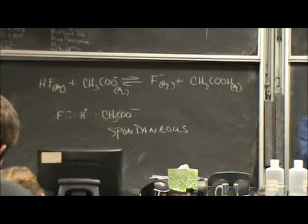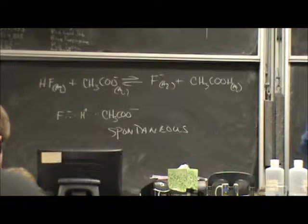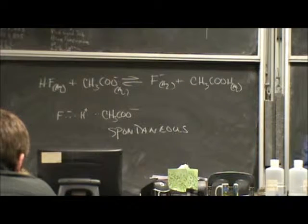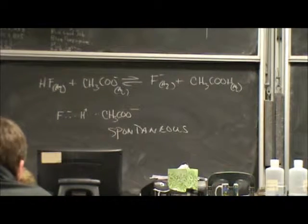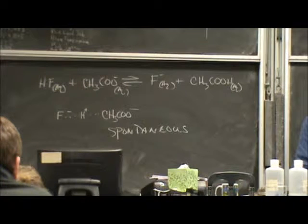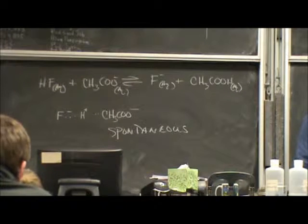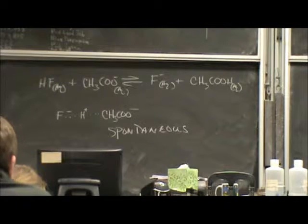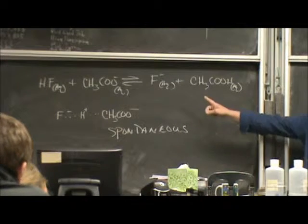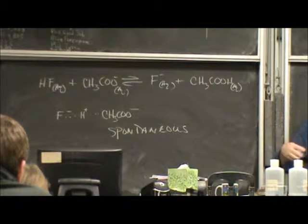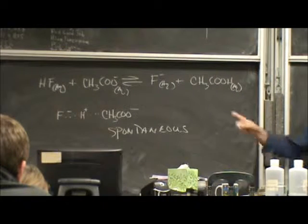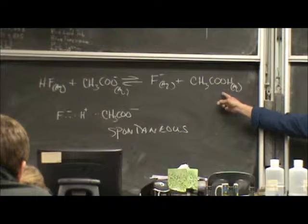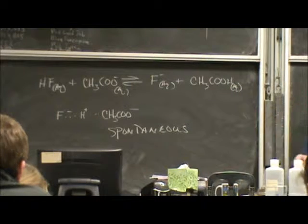Identify the two bases that are competing. Your table tells you which one's stronger. You know the stronger base is going to end up with the hydrogen more of the time. Now, which side does that stronger base end up with the hydrogen ion? Here, the stronger base was the acetate. So it's going to end up with the hydrogen ion most of the time. And since it's the product, that means most of our reactants are making products.